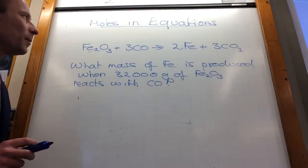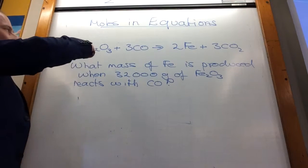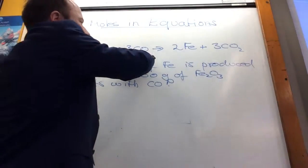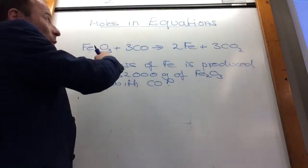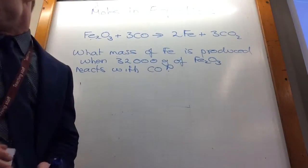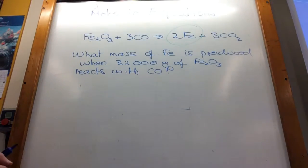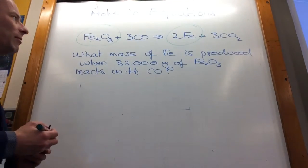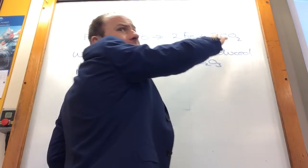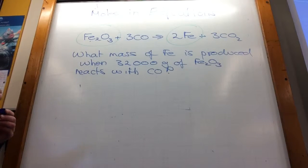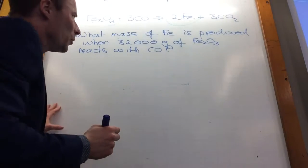So moles are really important when we come to look at how much is produced or how much we need to react. This equation is telling me if I take one mole of this and react it with three moles of carbon monoxide, I'll make two moles of iron and three moles of carbon dioxide. That's what those big numbers are telling me. What they'll often ask you is they'll say, what mass of iron, so circle what they're asking you about, is produced when 32,000 grams of iron oxide are reacted. Have they asked me anything about carbon monoxide? Have they asked me anything about carbon dioxide? So don't worry about it. Just circle the things that they've told you about. You've just got to follow these three easy, easy peasy steps and you will be able to sort these out.